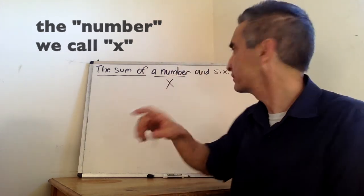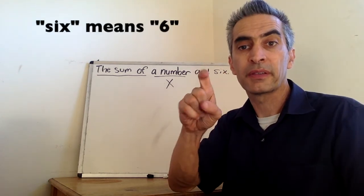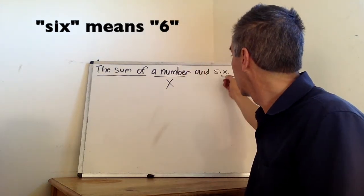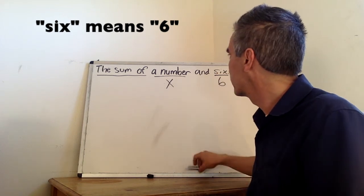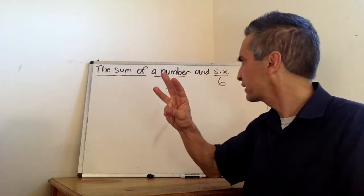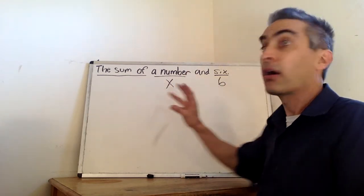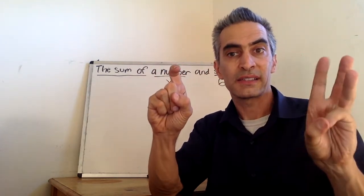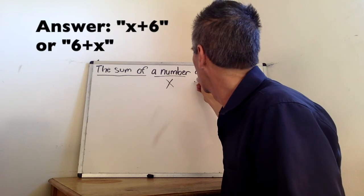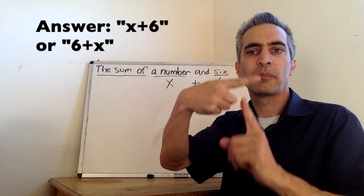This word means number. And we're going to name the number x. Now, this word means six. Right, the number six. This one says and. So, we have x and six. This says sum up. x, six. Oh, I know. The x and the six. We've got to add them up. We've got to add up the x and six. So, the answer is x plus six.